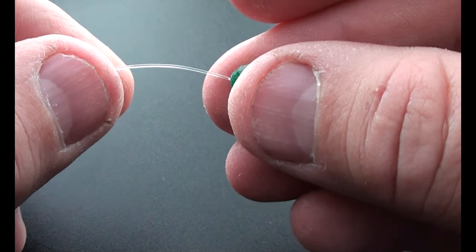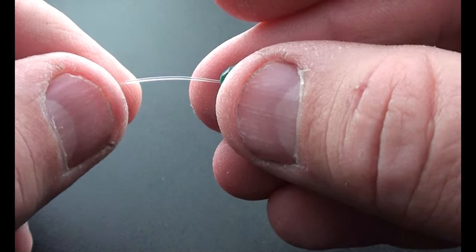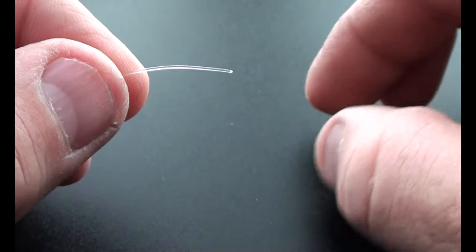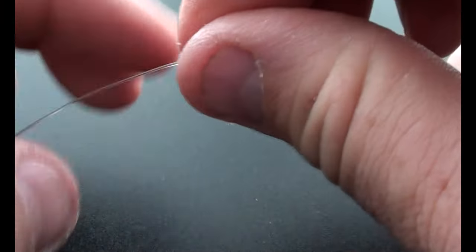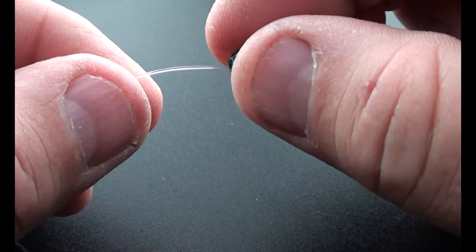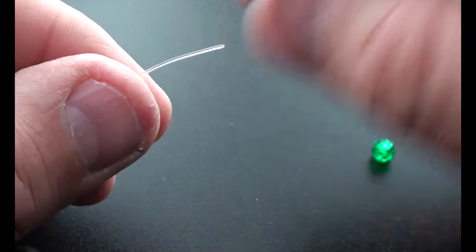Alright, the next step is pretty easy. We're just going to start by sliding our beads down the line. Again, I like to use four beads below the blade of the crawler harness. You can certainly vary that to your preference.